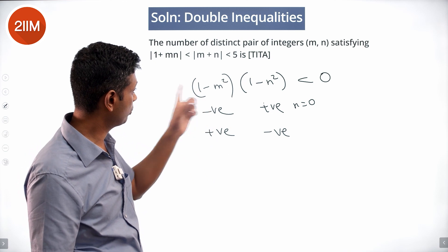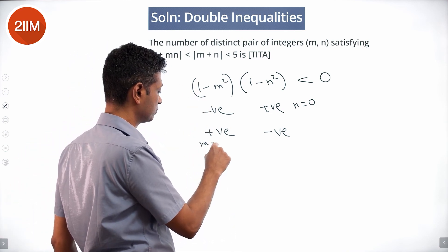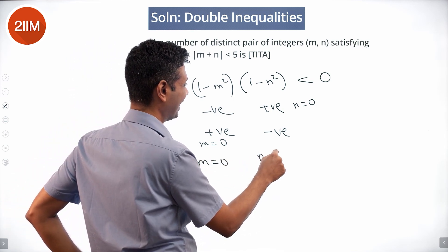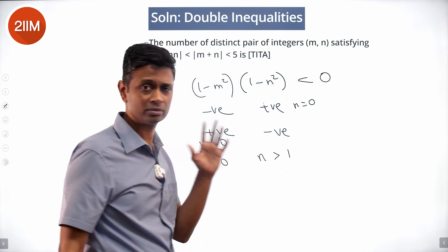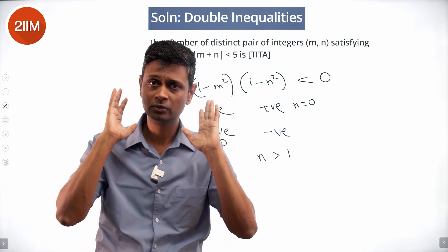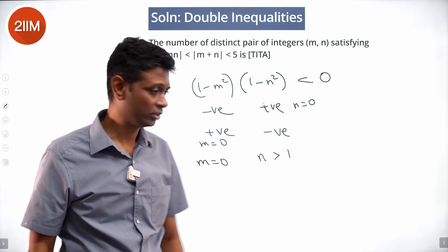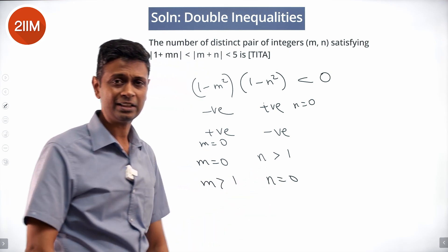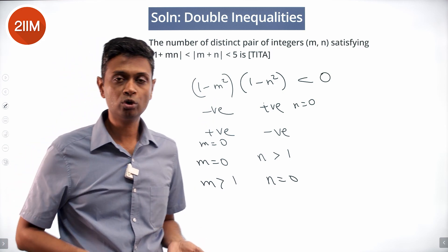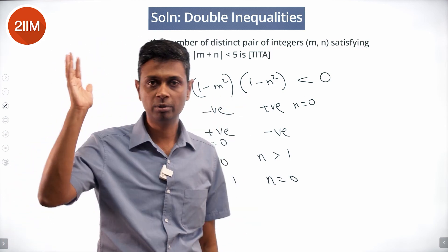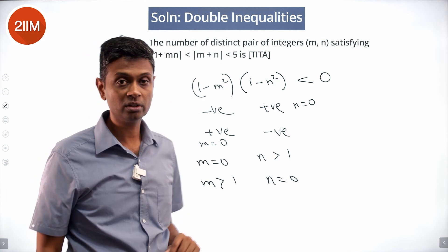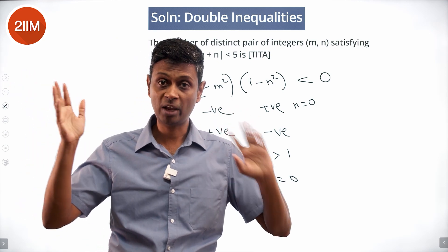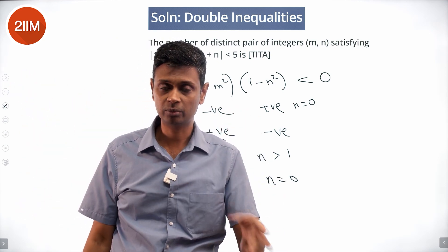The only positive possibility for (1 − m²) negative is when m = 0. So: m = 0 and |n| > 1 works, or n = 0 and |m| > 1 works. If m or n equals 1, the product goes to 0 — that doesn't work. If both are greater than 1, both factors are negative and the product is positive — also doesn't work. So one of them must be 0 and the other must have absolute value greater than 1.